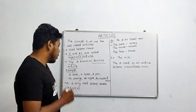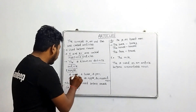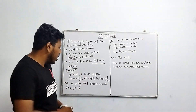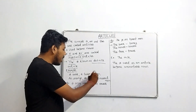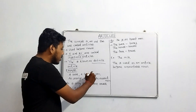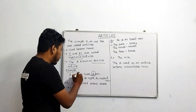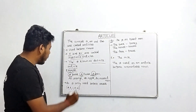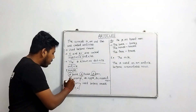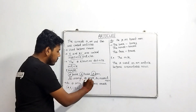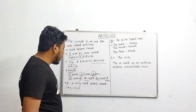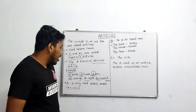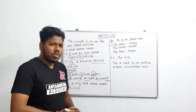The examples for 'a' are: a book, a table, and a pen. The examples for 'an' are: an apple, an orange, an innocent man.